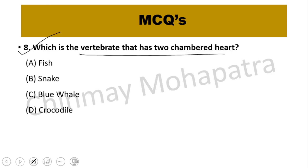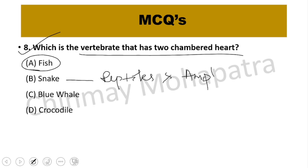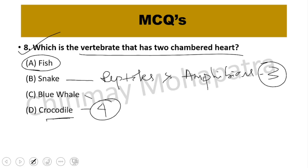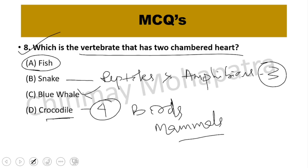Question number 8: Which vertebrate has a 2-chambered heart? Fish have a 2-chambered heart. Reptiles and amphibians have a 3-chambered heart. Birds and mammals — including blue whale and crocodile (which is a reptile with 4 chambers) — have 4-chambered hearts. So fish have 2 chambers, amphibians and most reptiles have 3, and birds and mammals have 4.